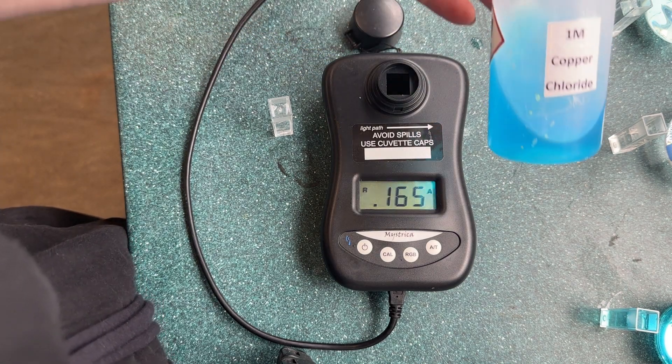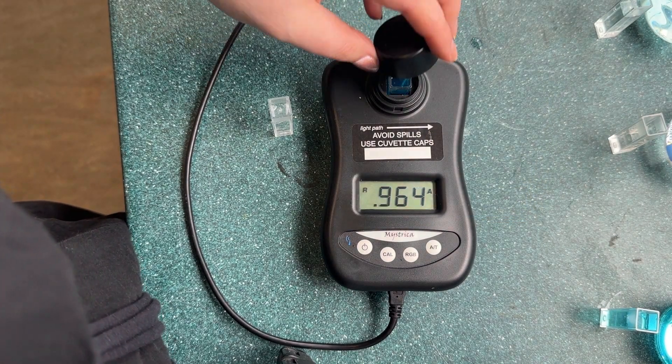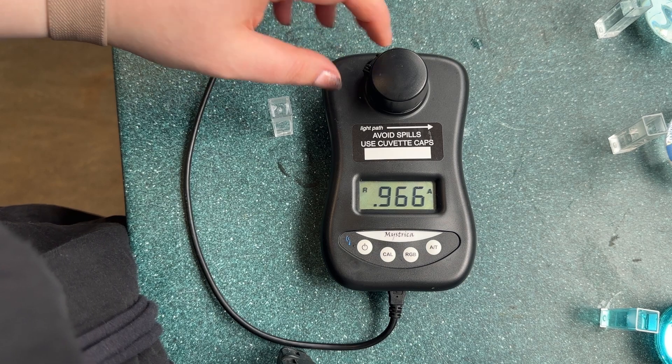Our final reading is with the 1 molar copper chloride solution which has a reading of 0.967.